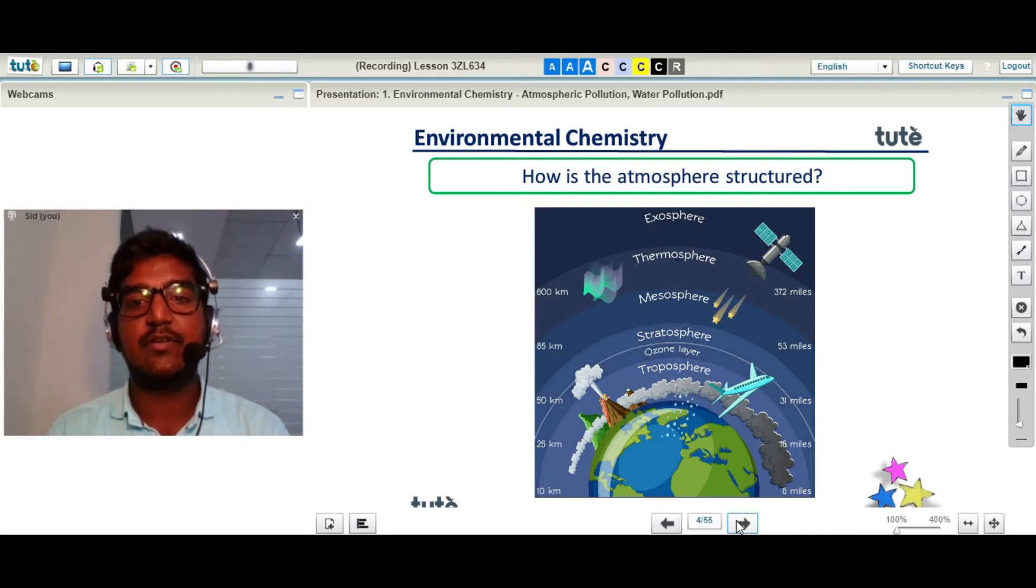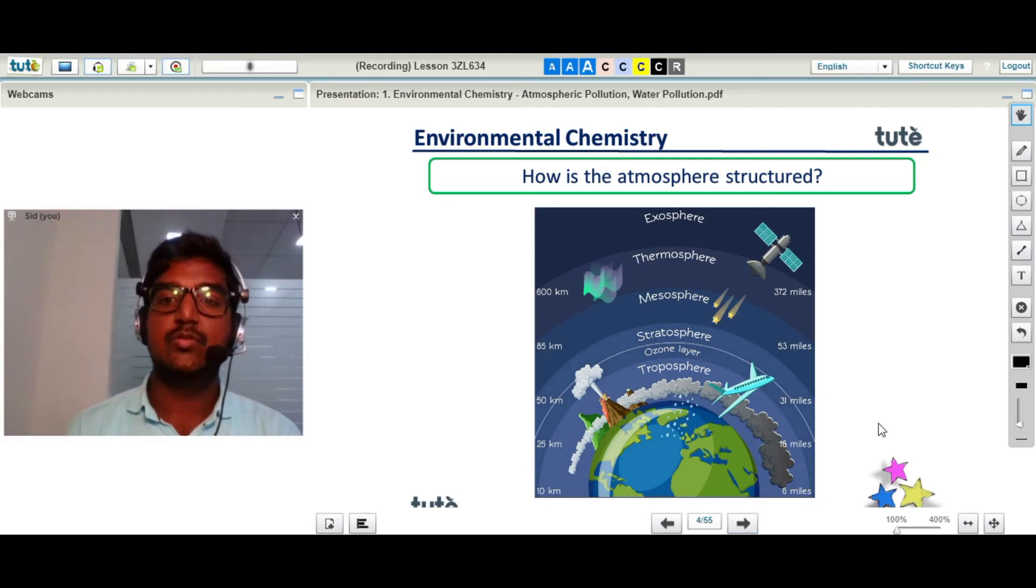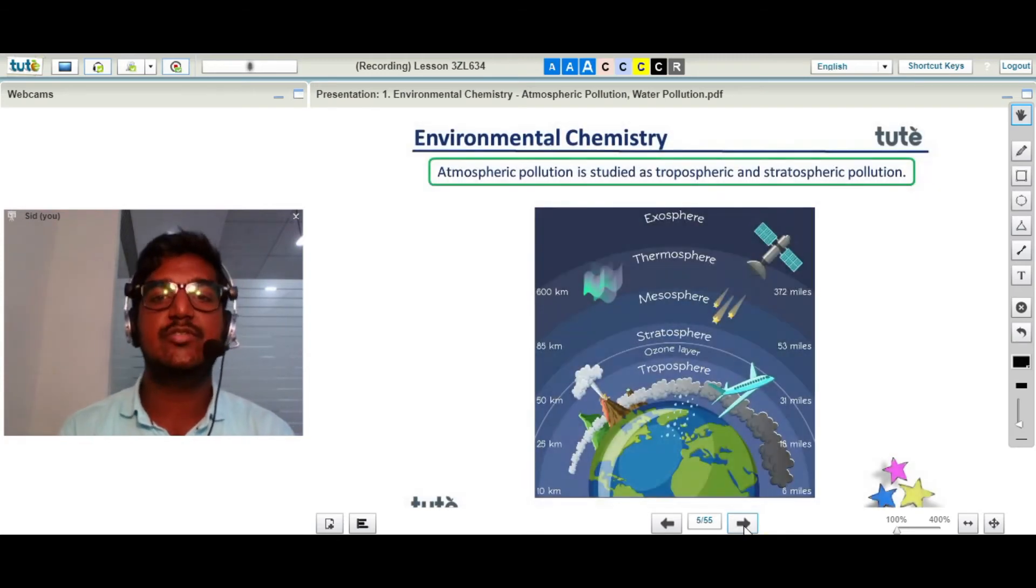The thermosphere is known to have the northern lights and ionic radiations. So we've taken a look at how the atmosphere is structured.